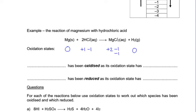So whose number has gone up? Because remember oxidation is when the number increases. And we can see that Mg has been oxidized as its oxidation state.